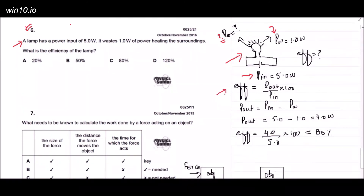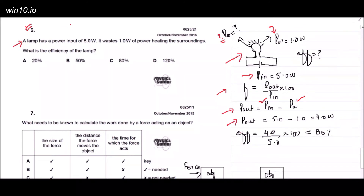The formula for efficiency is: output power over input power times 100. First calculate the output power: input power is 5.0 watts minus waste power 1.0 watt gives 4.0 watts of output power. Using the efficiency equation: 4.0 / 5.0 × 100 = 80%. Looking at the options, option C is the correct answer.